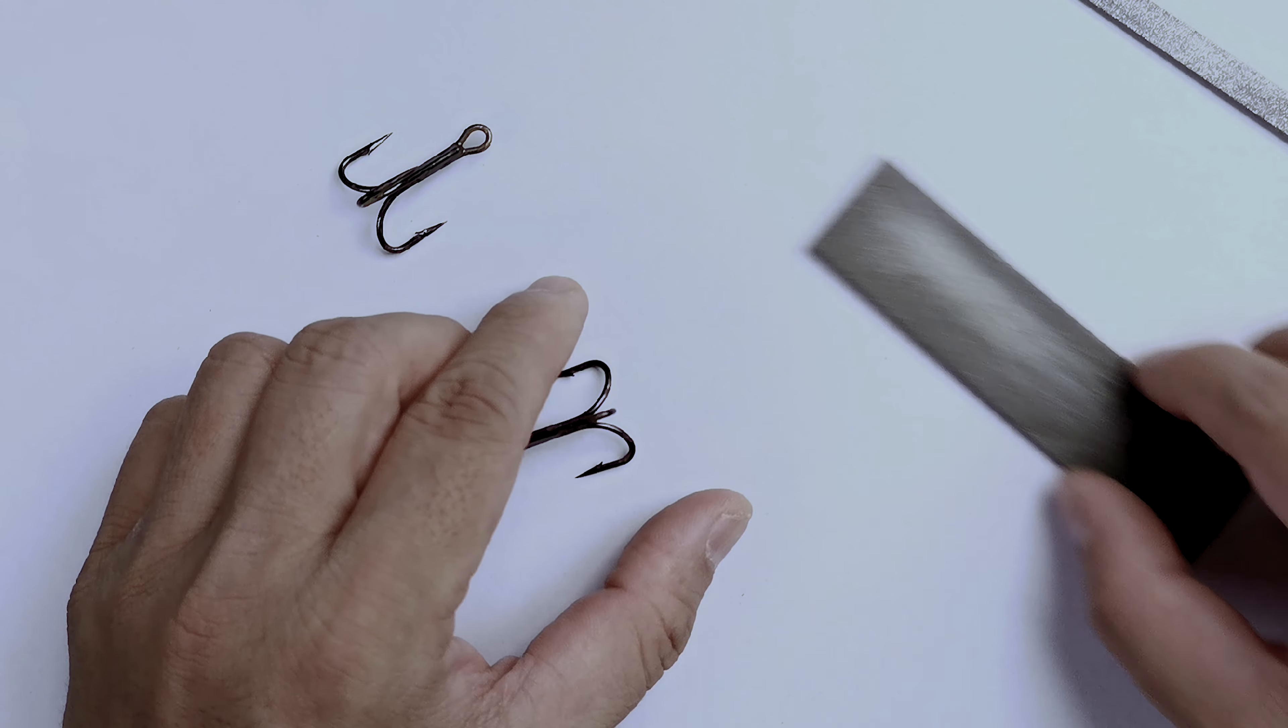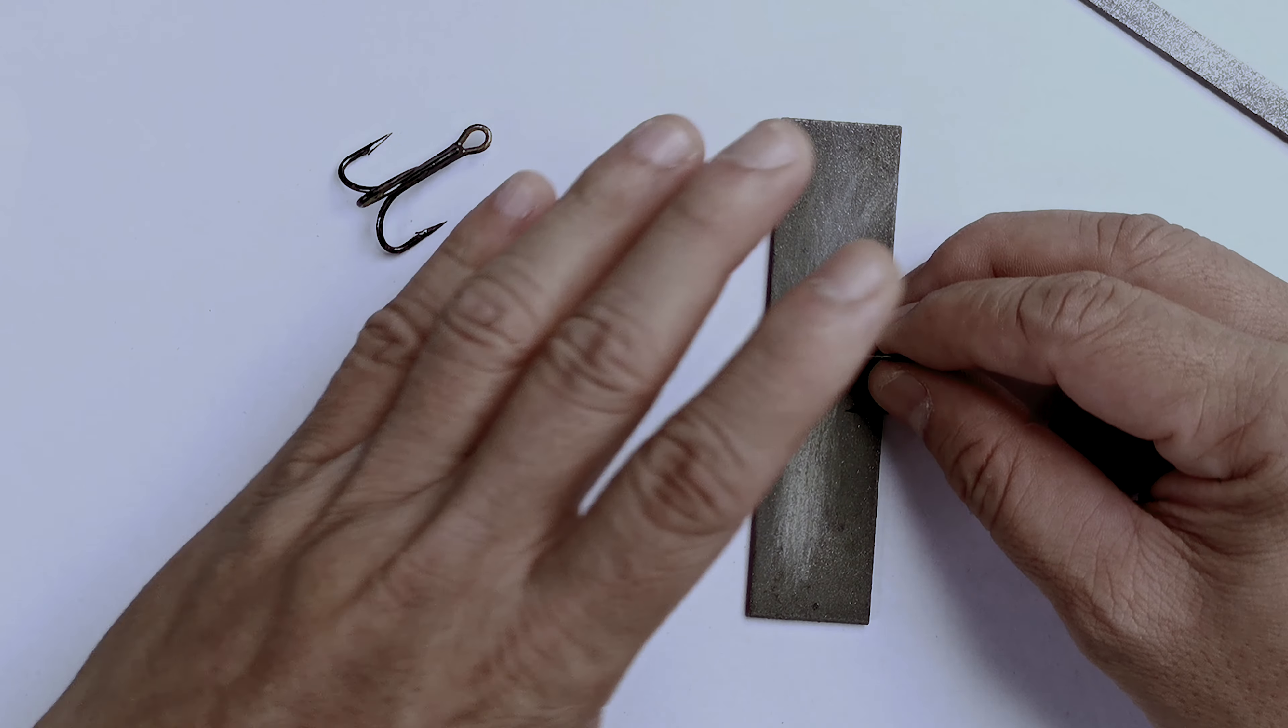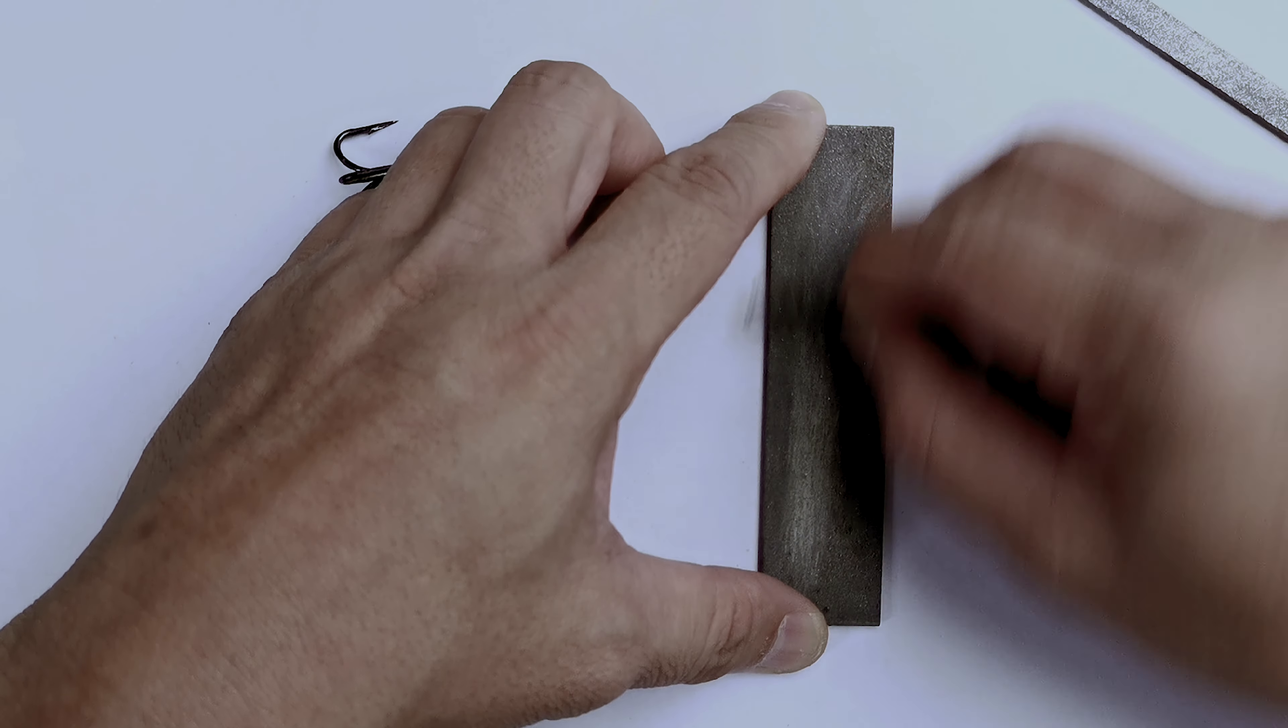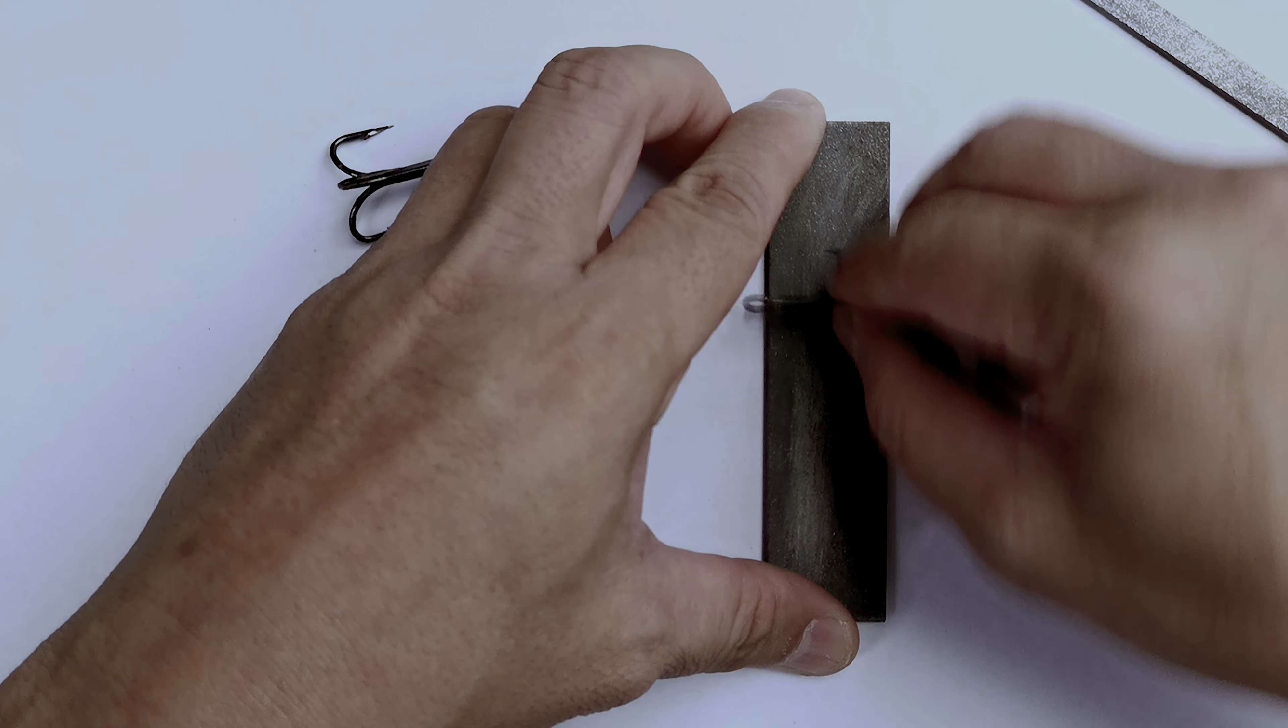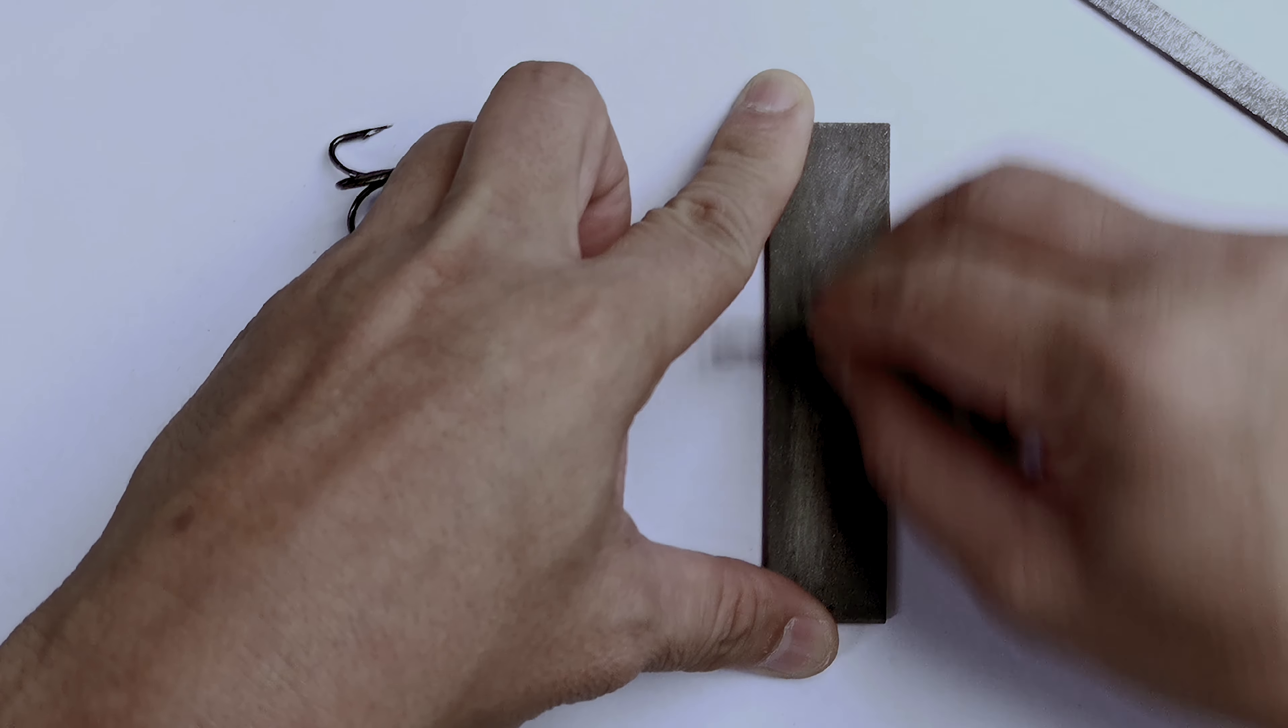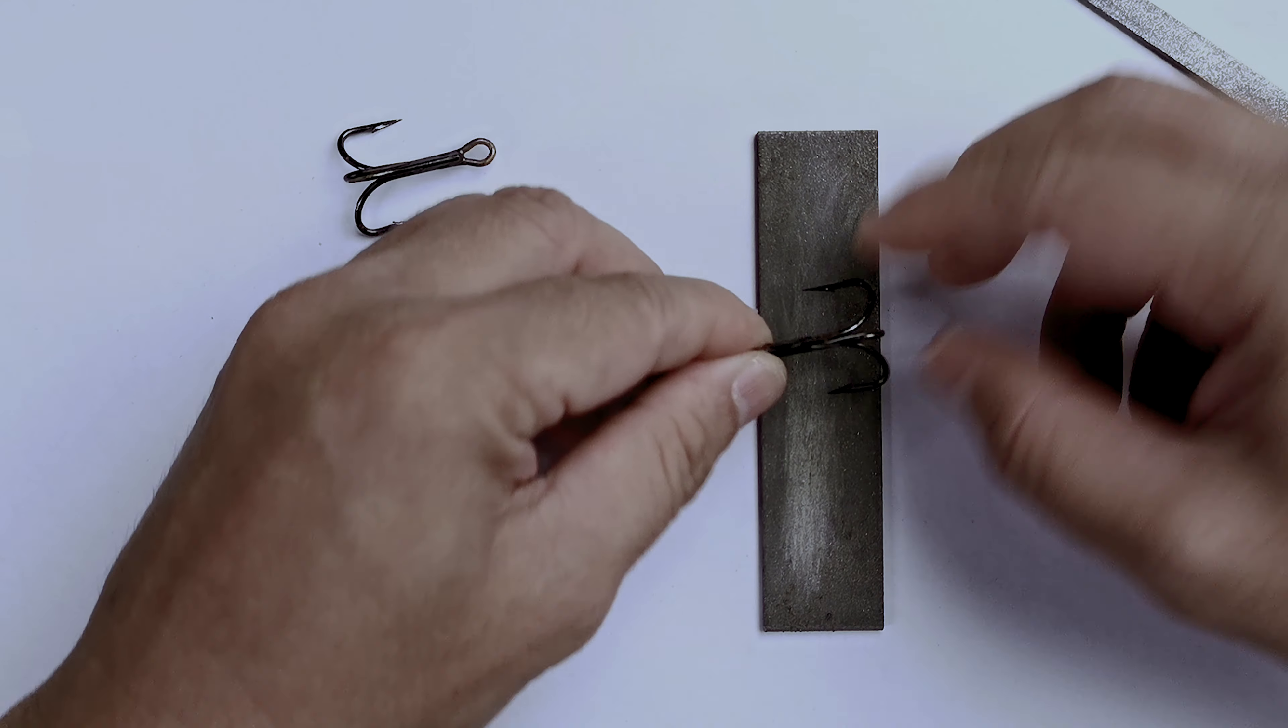Now, treble hooks are kind of very time consuming because they have three points. But what I do is with a file or with a sharpening stone, I go two and go like that and then turn and do the same. And what it does is give a uniform sharpening in each of those points. Just a few times, make sure that it's the tip that you are sharpening and not the shank.